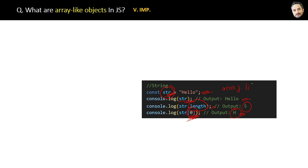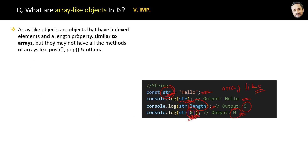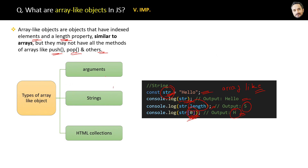The definition of array-like objects is: objects that have indexed elements and a length property similar to arrays, but they may not have all the methods of arrays like push, pop, or filter. Those methods are not available in array-like objects. Similar to strings, we also have the arguments keyword and HTML collections, which are also array-like objects.